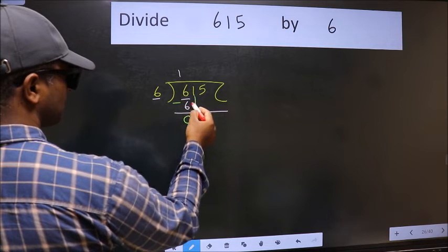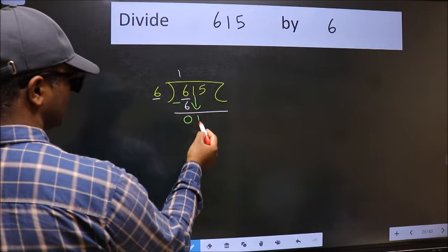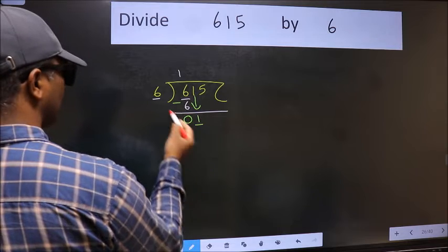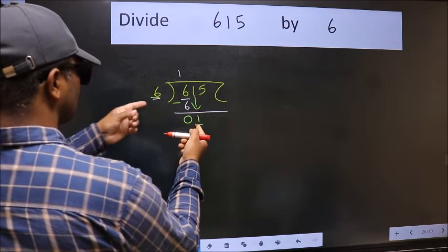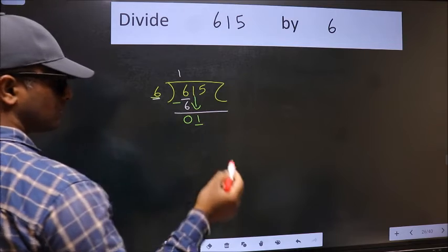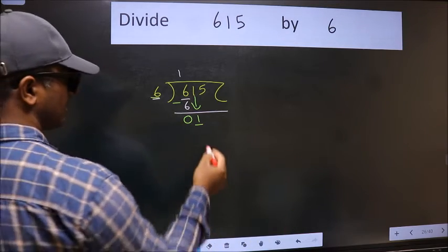After this, bring down the beside number. So 1 down. Now here we have 1 and here 6. 1 is smaller than 6, so we should bring down the second number.